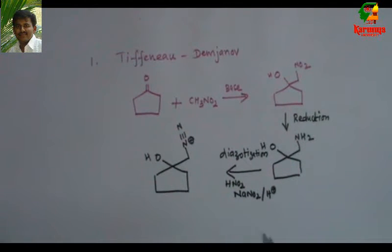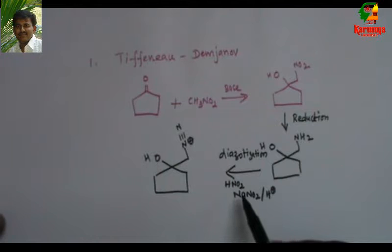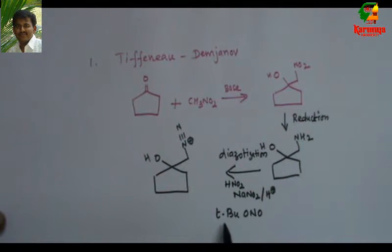This NO2 is reduced and converted into amine. This amine upon diazotization gives this diazotization salt. Diazotization generally is carried out with HNO2 or NaNO2 H+. Nowadays instead of this HNO2 there is another reagent that is tertiary butyl nitrite. Since it is organic, this is a better reagent compared to NaNO2 and H+.